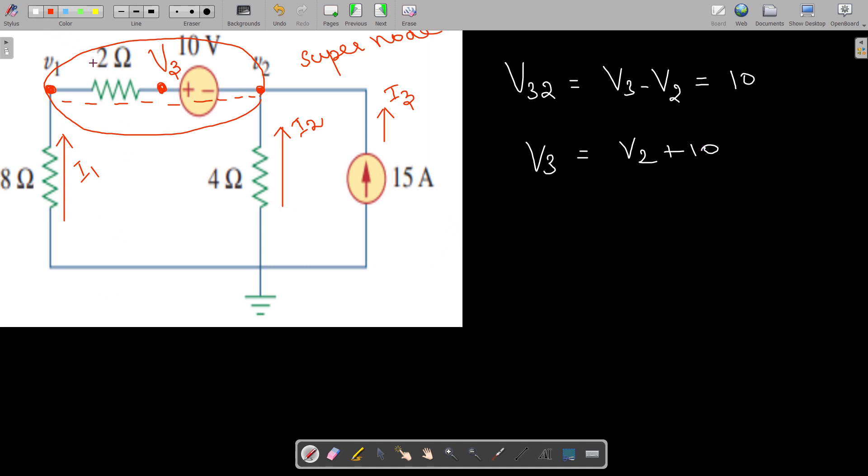Now if you check, the i1 current is the one which is flowing through this path also. Using the voltage divider rule we can find v1. v1 equals v3 multiplied by this resistance, 8, divided by the total resistance through which i1 is flowing, so 8 + 2 = 10 ohms.